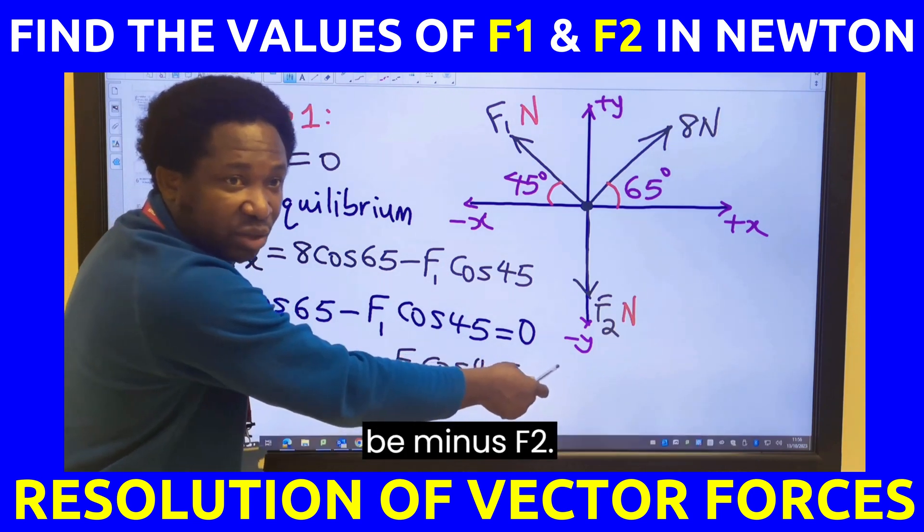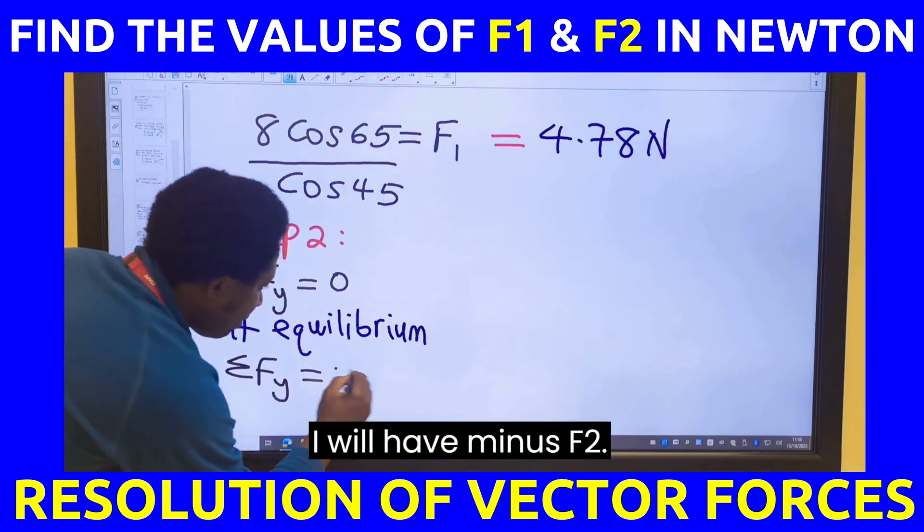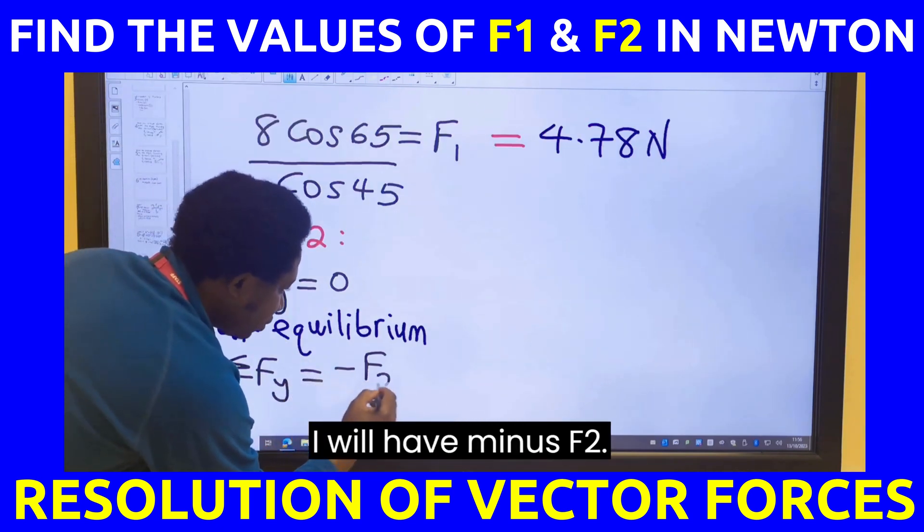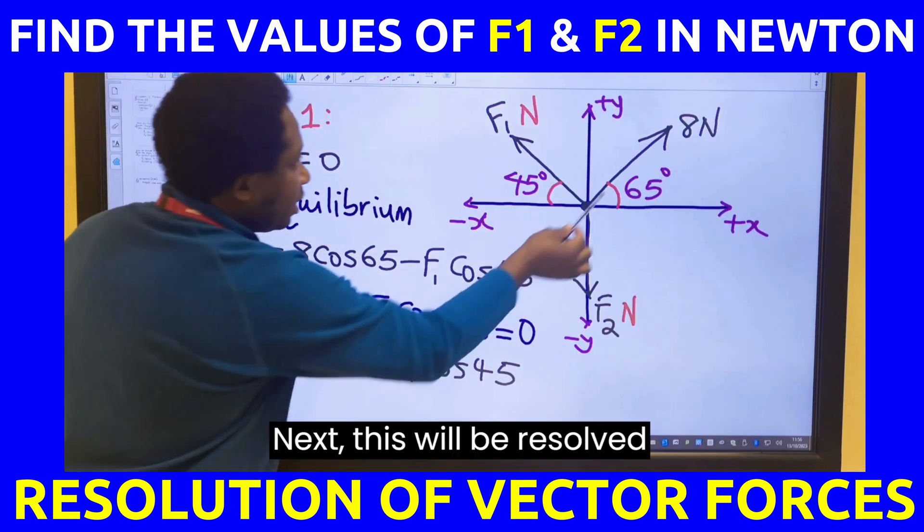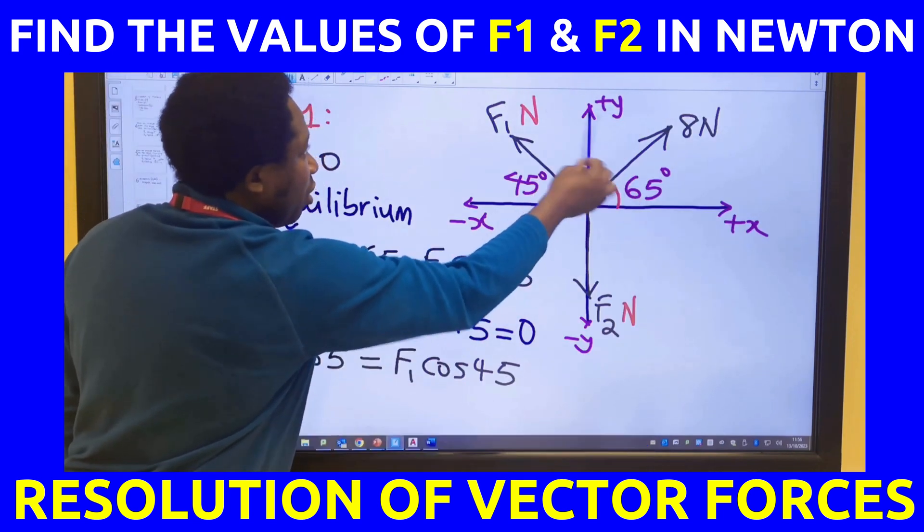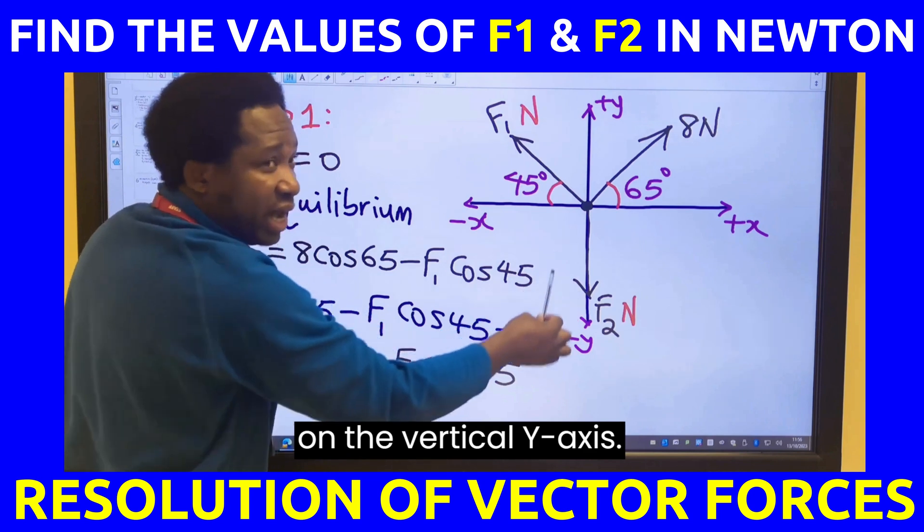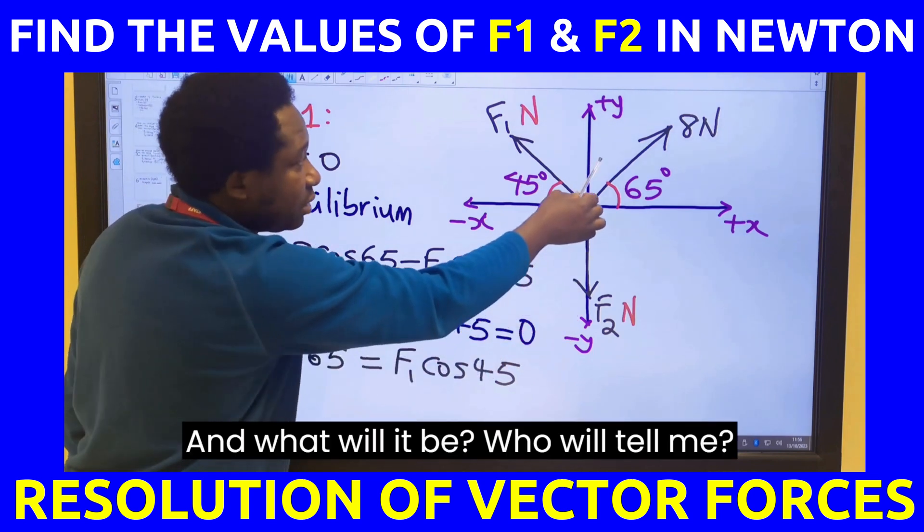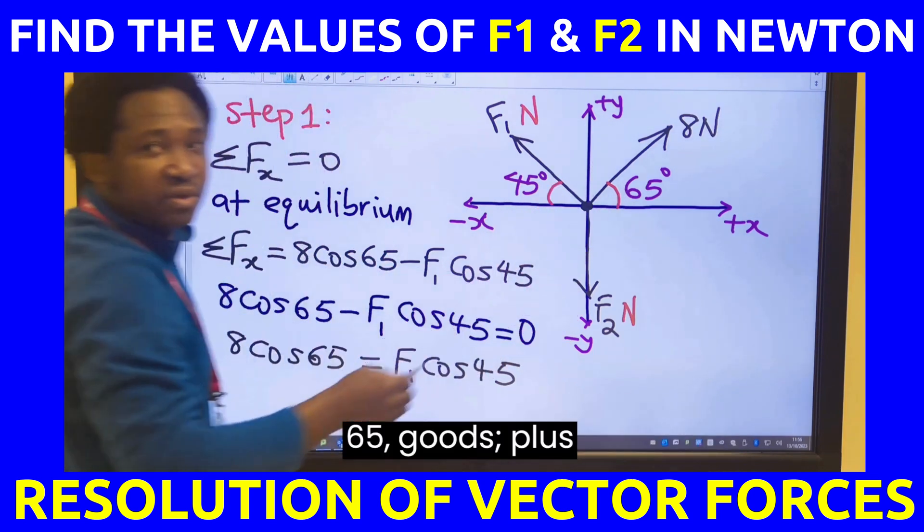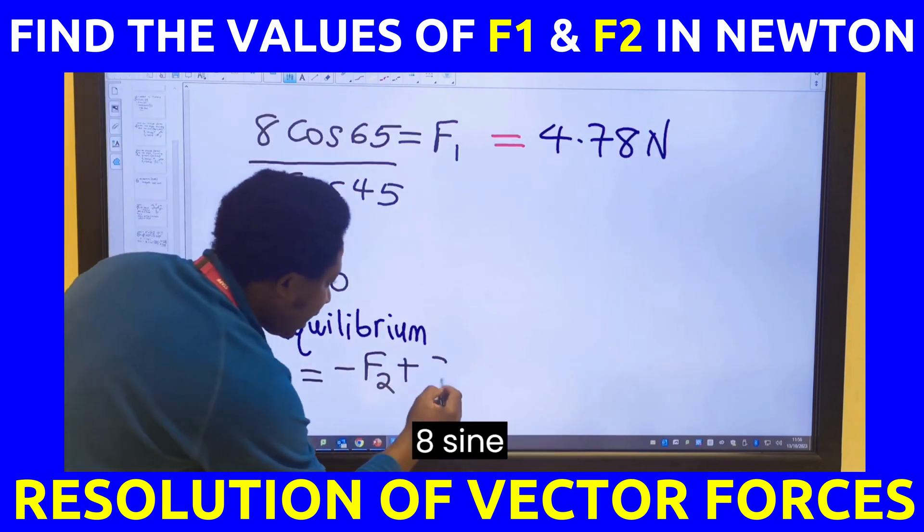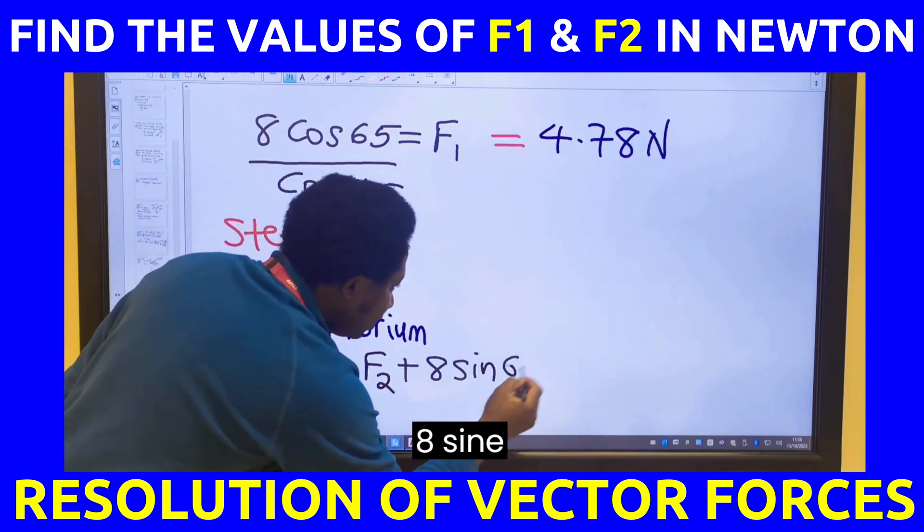So it's going to be minus F2. I will have minus F2. Next, this will be resolved on the vertical y-axis. And what will it be? 65. Plus 8 sine 65.